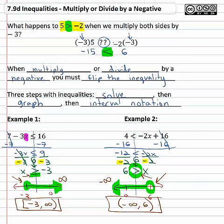So very important to be careful as we're solving these inequalities: if you multiply or divide by a negative, the inequality must flip directions.